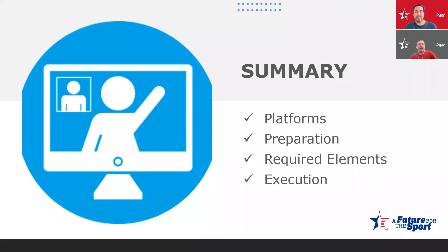In summary, if you're not able to hold your annual meeting in person this year, we've shown you a variety of platforms that you could use for both the video portion as well as optional platforms to help with your voting. We'll be sending out a copy of this presentation to everyone, and we'll be putting a recording of the webinar on the ARCatBowl.com in a few days. Feel free to watch again and share with others who may not have been able to make the webinar. We've covered preparation, the required elements you'll need to do during your meeting, and then execution — how to run the meeting while you're online for your members.